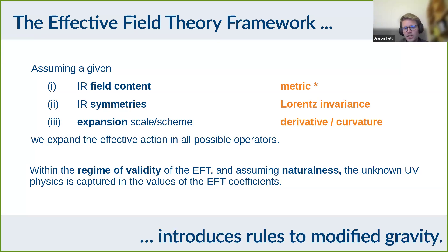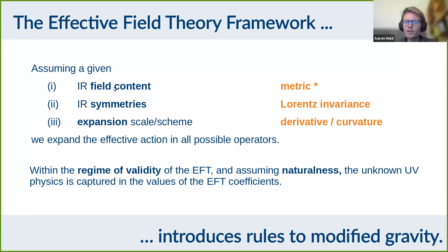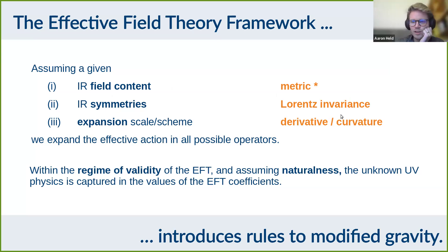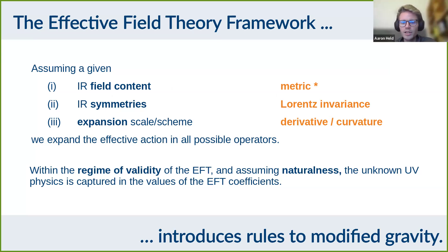This is nice because while there are plots of all possible things you can do in modified gravity, the EFT approach introduces strict rules. You still have to specify your field content and symmetries, but then it introduces rules for how modifications of gravity are expected to enter. That also includes diffeomorphism invariance — I will not touch diffeomorphism invariance. My foliation will formally break part of the diffeomorphism group, but the foliation is arbitrary — it's just picking a gauge.